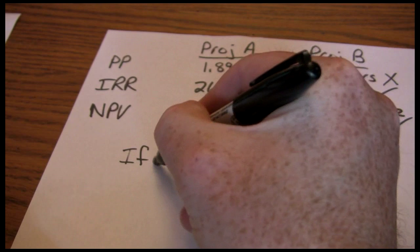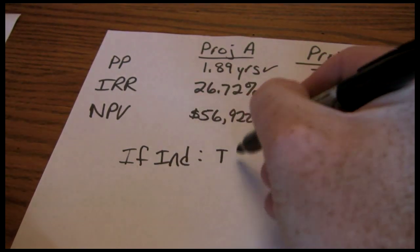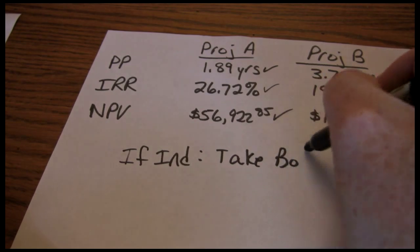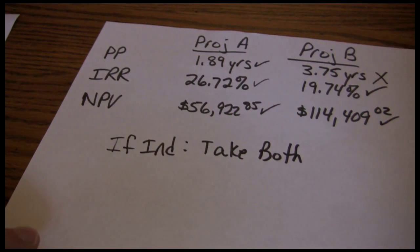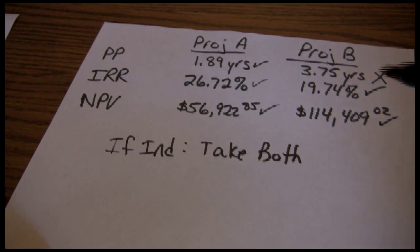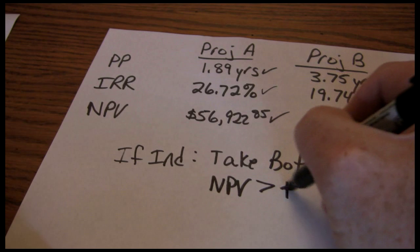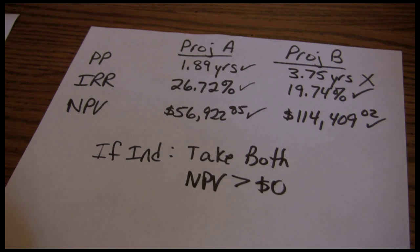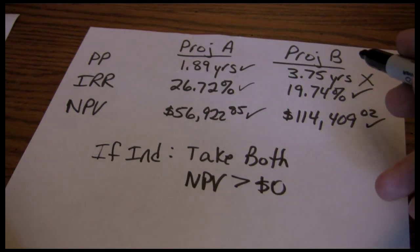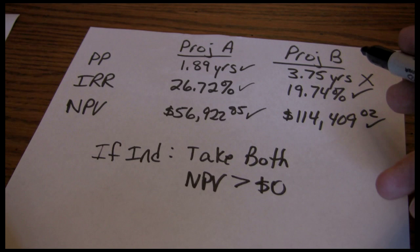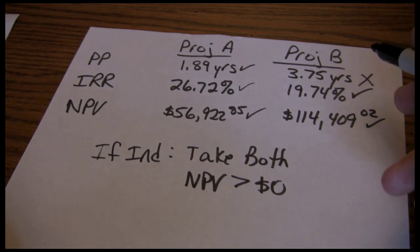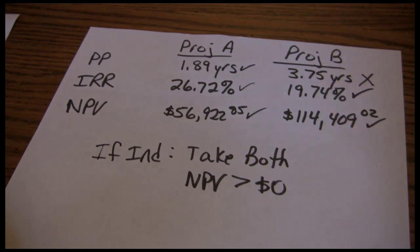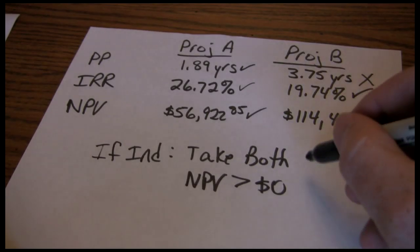If the projects are independent, in this example, what we want to do is take both. That's because whenever there's a discrepancy between the three rules, net present value is our best rule. In this case, both projects have a net present value greater than zero, so we should accept both projects. Payback period is probably the worst of our three decision rules — it's not a very reliable model. It might be useful during periods where the firm faces severe financial distress, but under normal situations, payback period is the least effective. Net present value is the best, so if there's a conflict in the rankings, we want to pay attention to net present value.